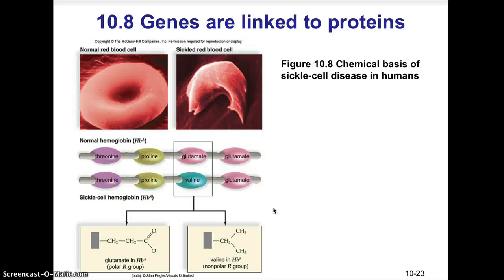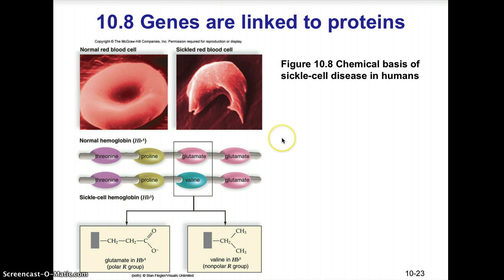Genes are linked to proteins. A good example is the chemical basis of sickle cell disease — here you can see the normal erythrocyte versus a sickle cell type. The protein hemoglobin, which carries oxygen in cells, has amino acids threonine, proline, glutamate, and glutamate. Just changing one of those amino acids — replacing glutamate with valine — produces a sickle cell instead of a normal erythrocyte, changing the biochemistry and structure of that cell.